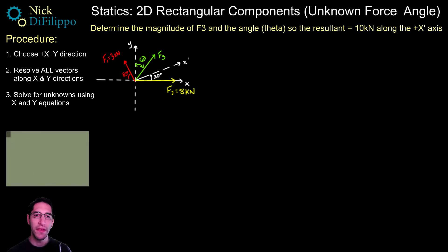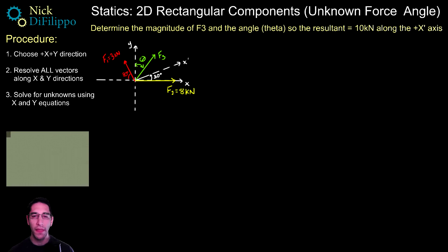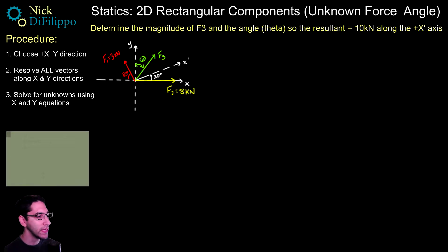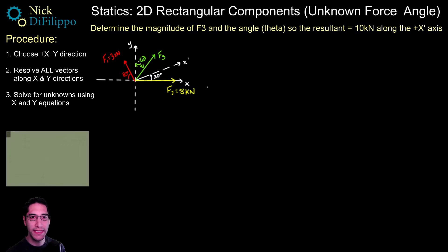If you are using 2D rectangular components, there is another type of problem you may be asked to solve. Up until now, all of the problems we have looked at with 2D rectangular components have given all the forces and asked us to figure out what the resultant is and what angle it makes. However, the other type of problem is we could be told that the resultant needs to lie along a certain line, and for this resultant to lie along a certain line, what is the magnitude and angle of a different force in the problem.